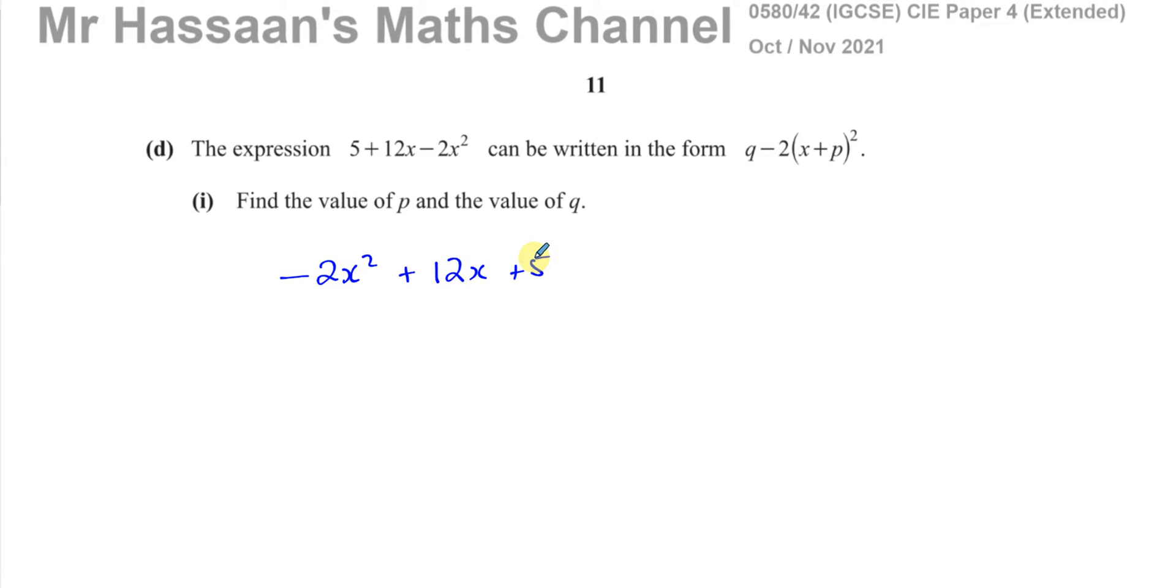Now when I want to complete the square, I don't want to have any number in front of the x² or as a coefficient of x² except 1. So this negative 2, I'm going to write it down like this and I'm going to take out that negative 2 from this x². So I'm taking it out almost like a factor.